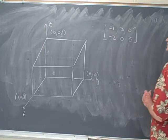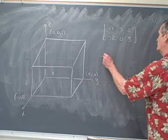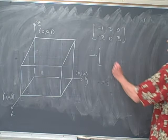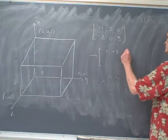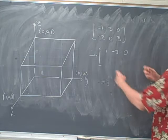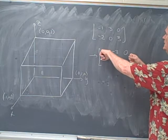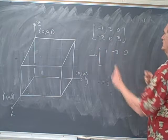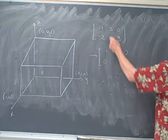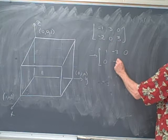So in order to find the kernel of the matrix, we're going to have to row reduce the matrix. So let's multiply the first row through by a negative 1, and then let's add 2 times the first row to the second row. So we would get 0 here, and then we get negative 6 here, and then we get 3 here.